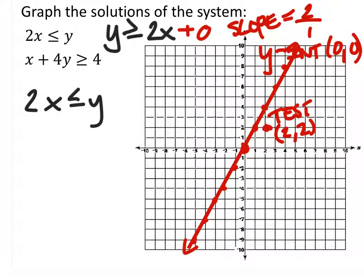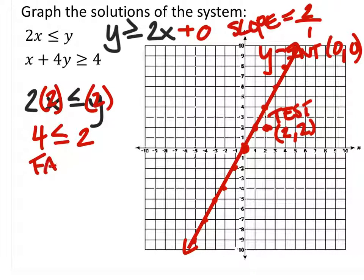I'm going to use the original though, right? Yeah. So, I'm going to replace x with 2 and y with 2. If 4 is less than or equal to 2, that's false. So, our test point came up false, which means we need to shade the other side of that line.